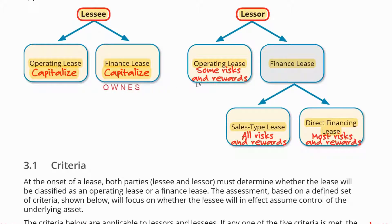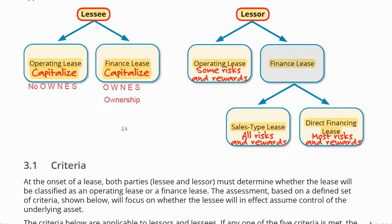If both P and C are met, then this is a direct financing lease. P refers to whether the present value of lease payments equals or exceeds the underlying asset's fair value. Now remember, you just need any of the OWNS to be met to have a sales-type lease for the lessor, but you need both P and C to be met for direct financing. The O stands for ownership.